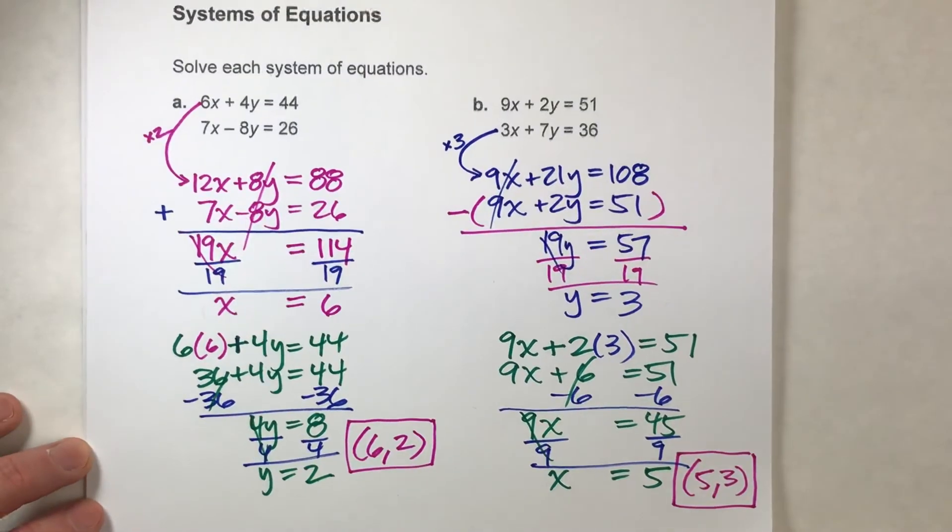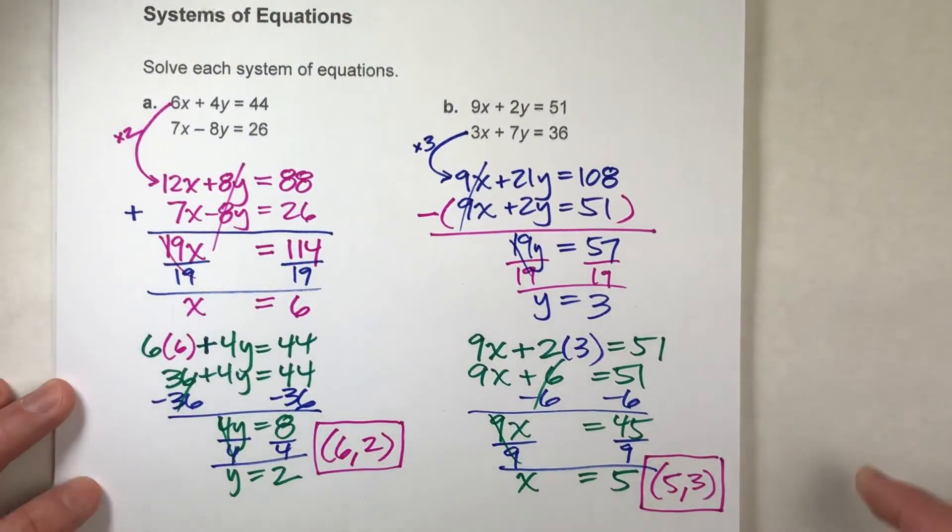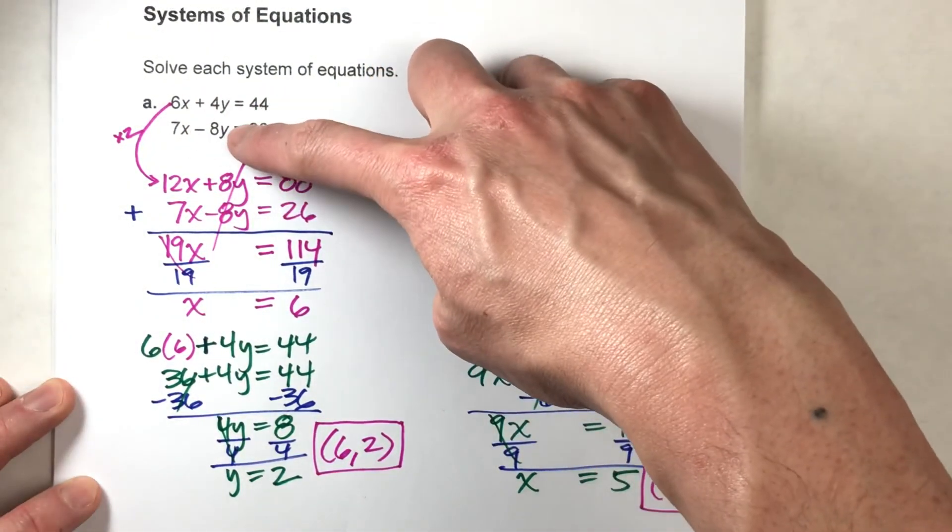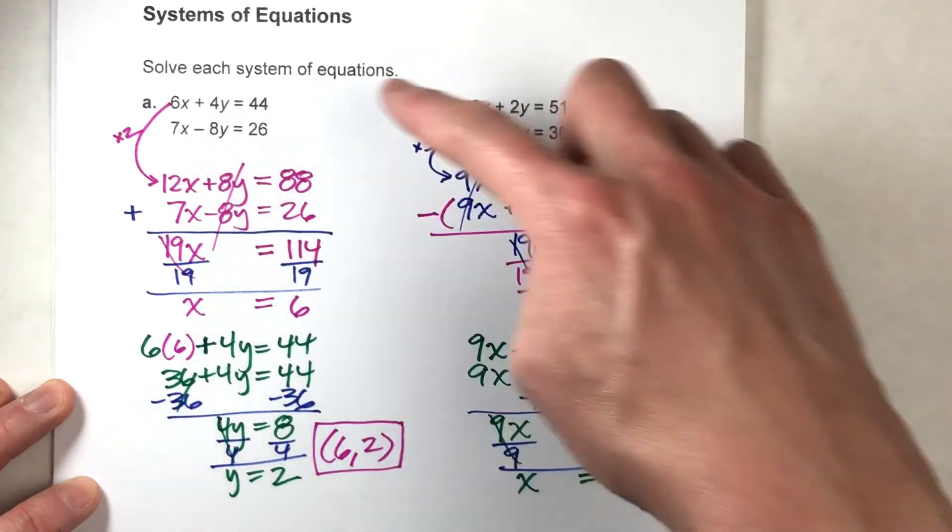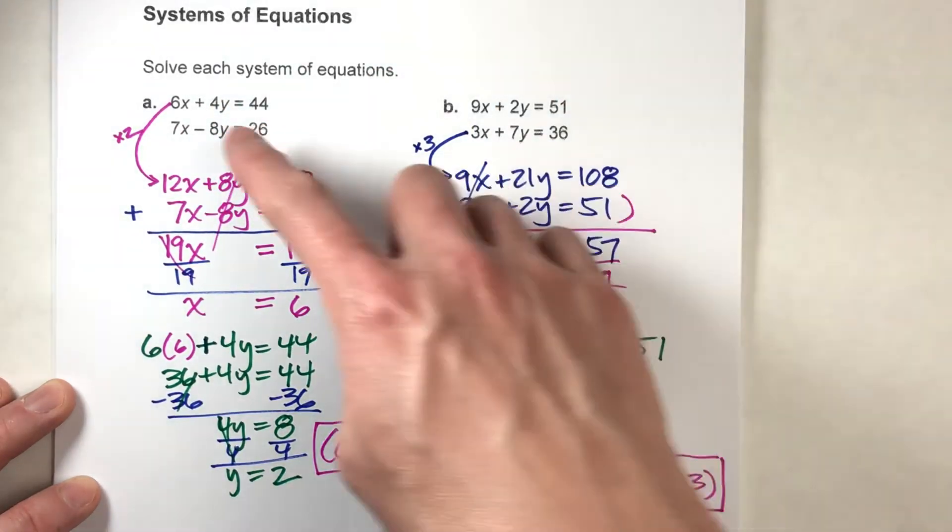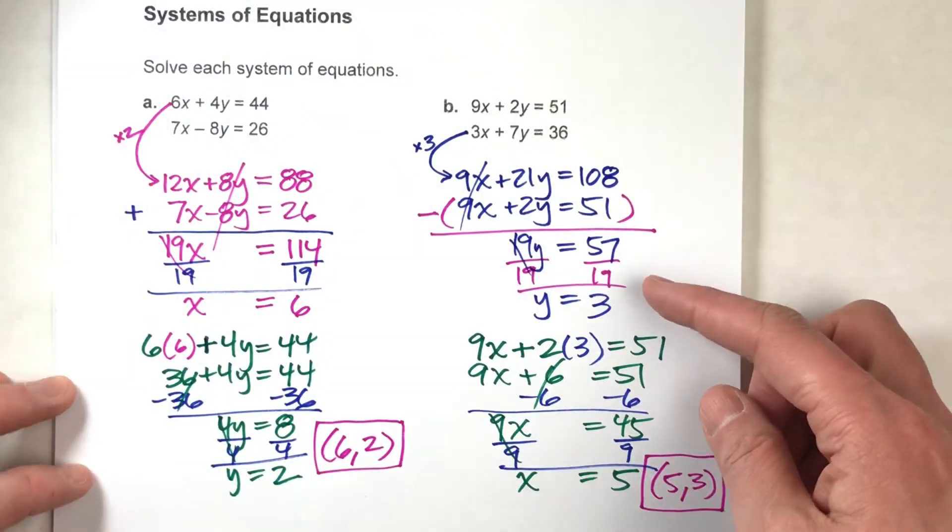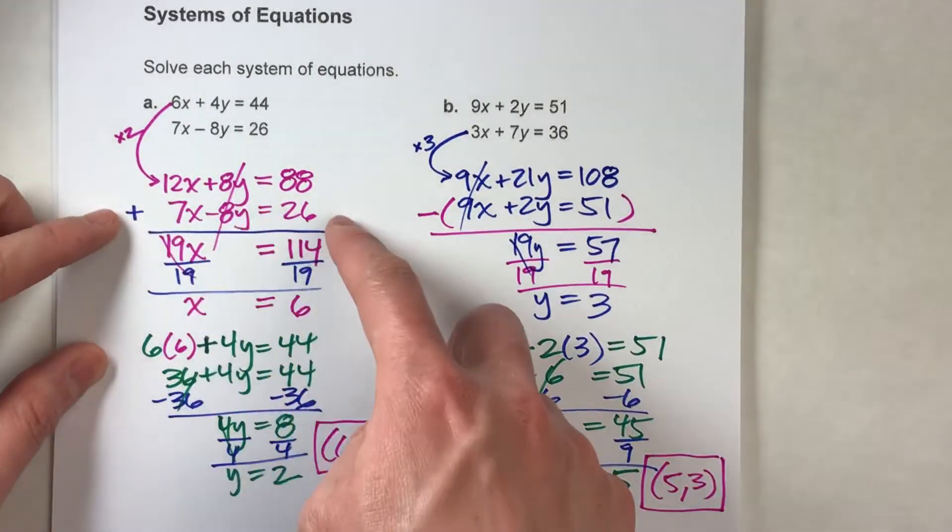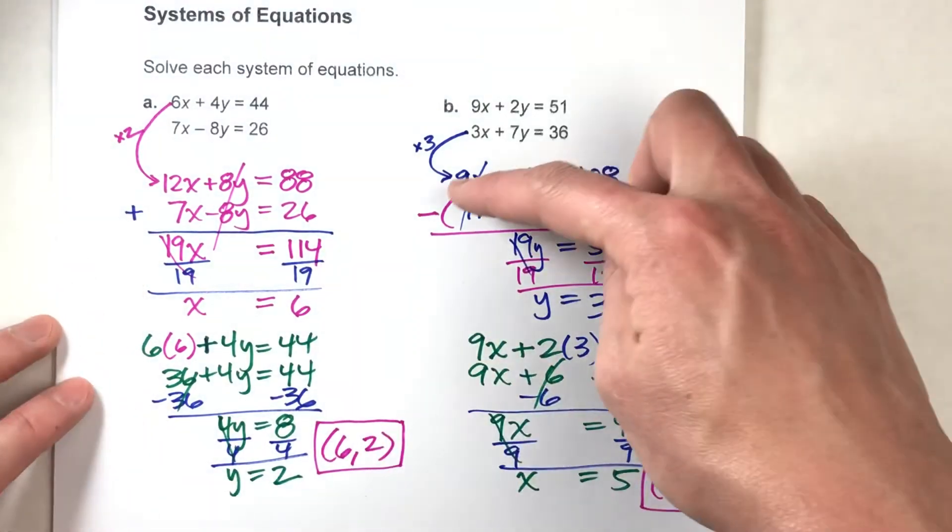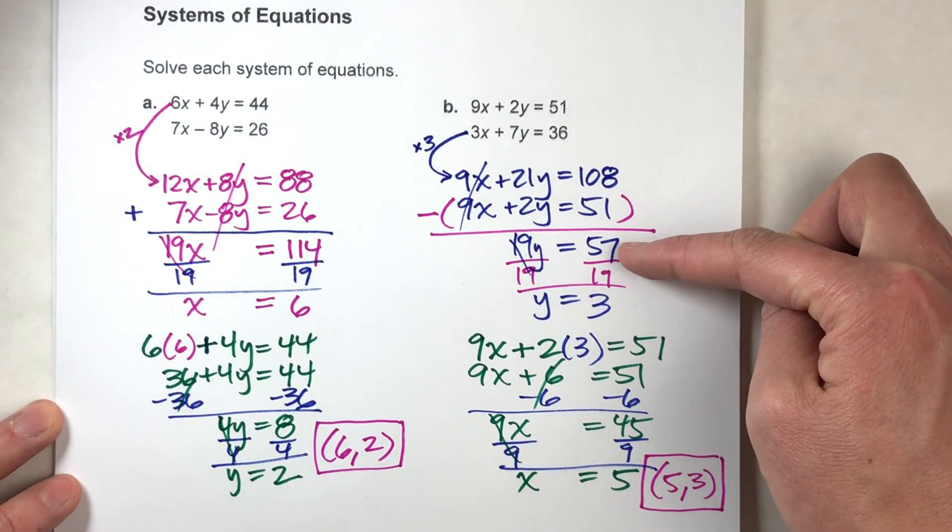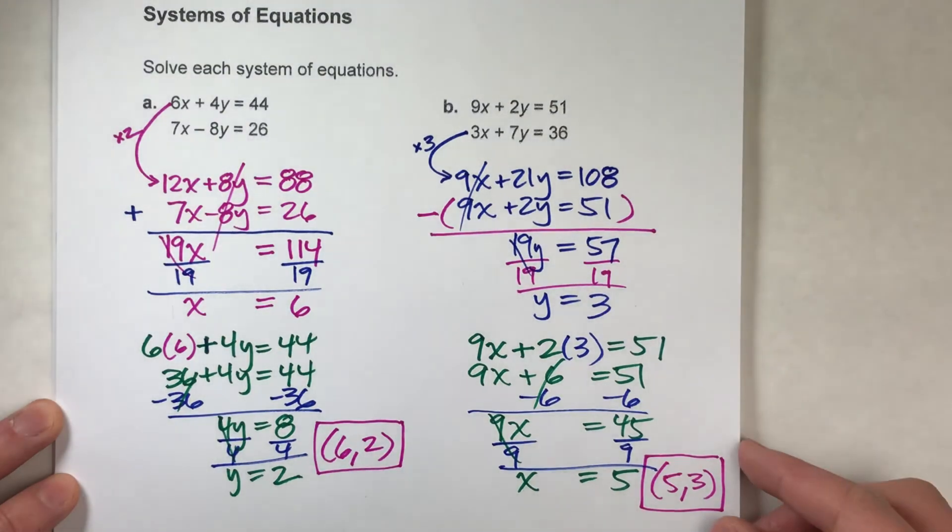When you have a system of equations and the X's and the Y's neither of them match up, what you can do is see if you can multiply one of the equations by a number so that they will match up, and then you can either add the equations to eliminate a variable or subtract the equations to eliminate a variable. I hope you found this video helpful. If you did, please hit that like button, also subscribe because it really helps us out.